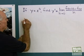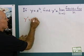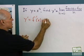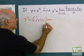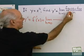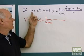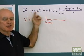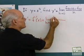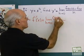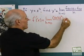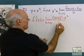So y prime is going to be equal to f prime of x, which is going to be the limit as h goes to 0. I want f of x plus h. Well, f of x is going to be x squared, so f of x plus h is going to be the whole quantity x plus h squared. So this will be x plus h quantity squared minus just f of x, which is x squared, all divided by h.